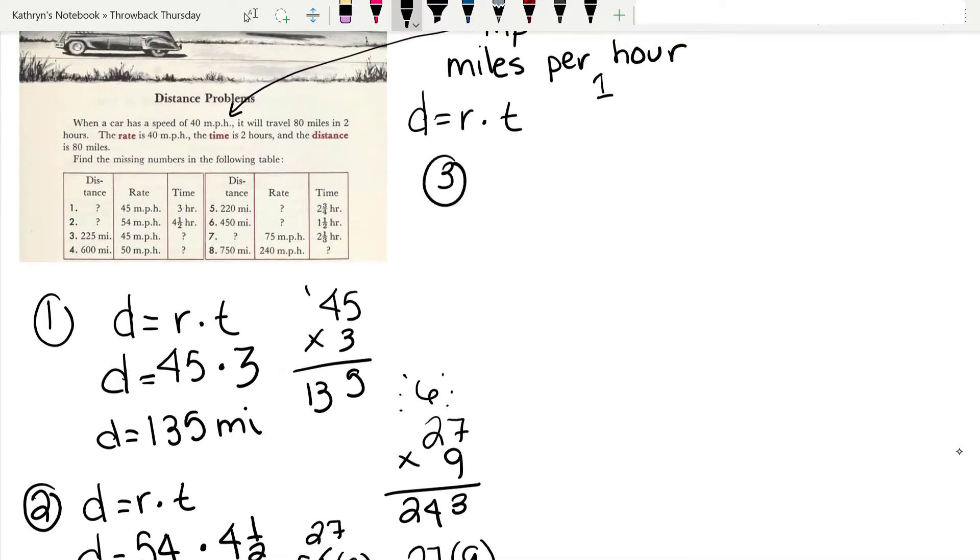Let's try number 3. They give us the distance. Let's rewrite our formula. We know the distance is 225 miles. The rate is 45 miles per hour. Now we don't know the t. I'm just going to rewrite it: 225 equals 45 times t. Now we want to get t by itself. This actually starts a little bit of algebra, but if you haven't learned algebra, it's okay. Any time I have a number next to a letter, it means to multiply. What's the opposite of multiplying? You're right. Dividing.